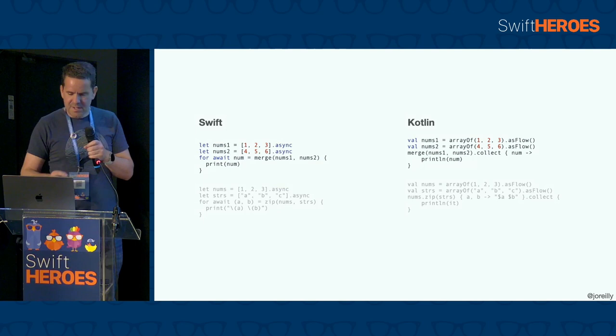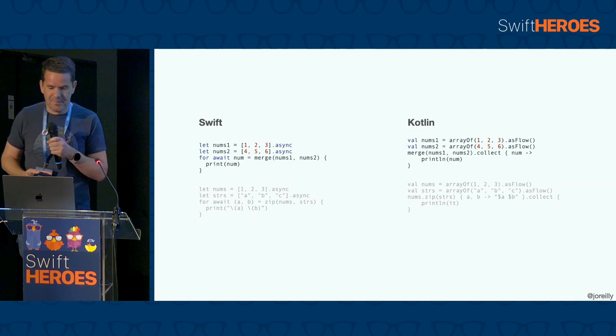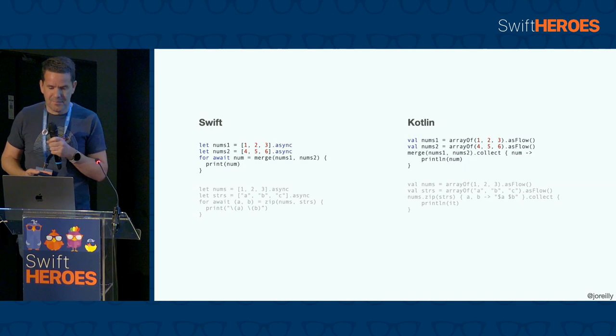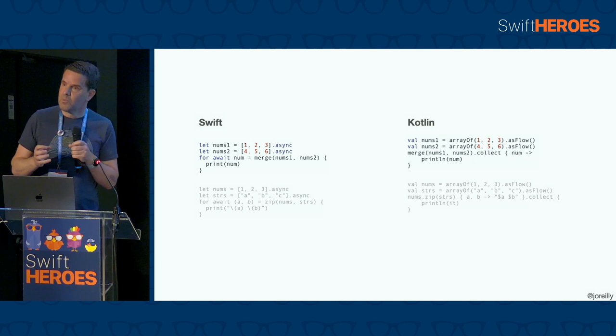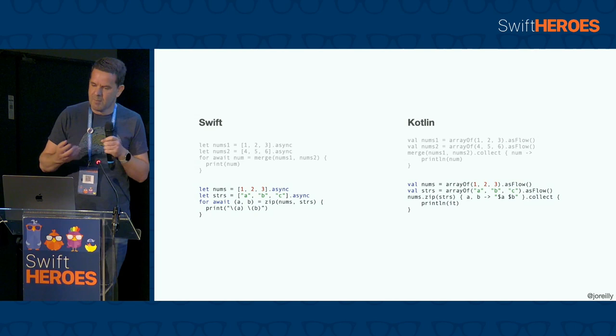Here are a few examples using some of the new operators in the async algorithms package, along with their Kotlin equivalents — using the new async method to convert a Swift array into an async sequence, with asFlow being used in Kotlin to achieve the same purpose. We use for-await in Swift and collect in Kotlin. And then examples of the merge operator and the zip operator, with several other operators now in common as well.